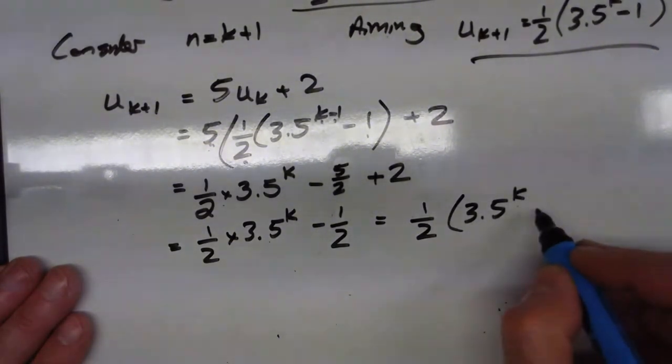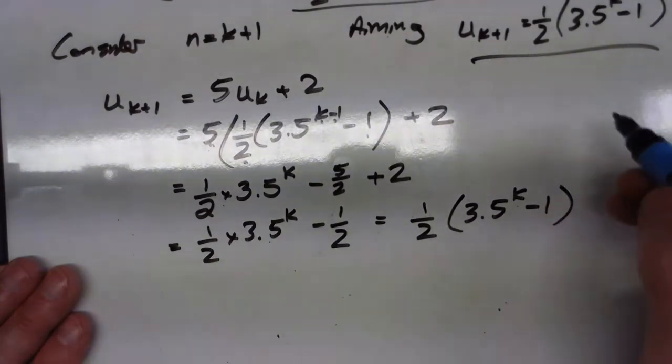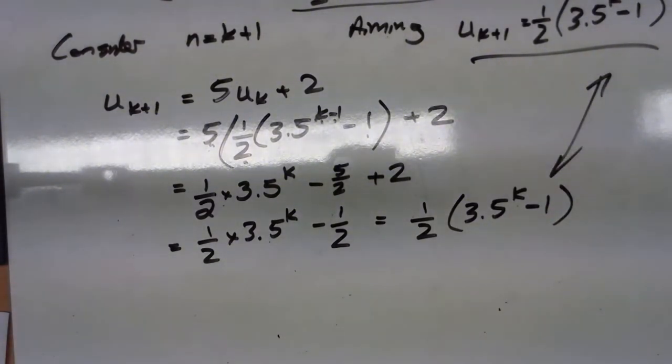3 times 5 to the k minus 1 as required. And then I'd write true for 1. If true for n equals k, then true for k plus 1. Therefore, by induction, true for all natural numbers. Sorry for the slip.